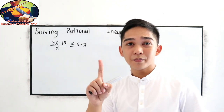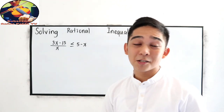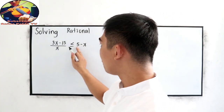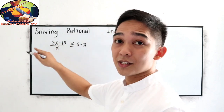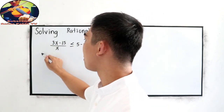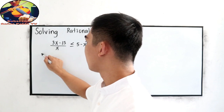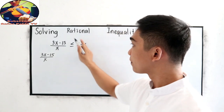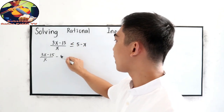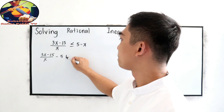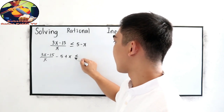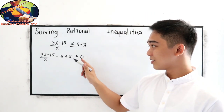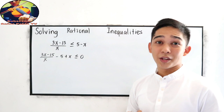Our first step: the inequality must be equal to zero. So let us move 5 minus x to the left side using the addition property of equality. We get 3x minus 15 over x, minus 5 plus x, is less than or equal to zero. This is now equated to zero.